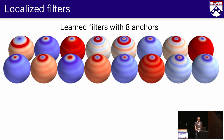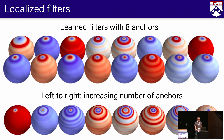These are some examples of learned localized filters. On the top, we show learned filters with eight anchor points. And on the bottom, from left to right, we increase the number of anchors, which results in progressively less localized filters.